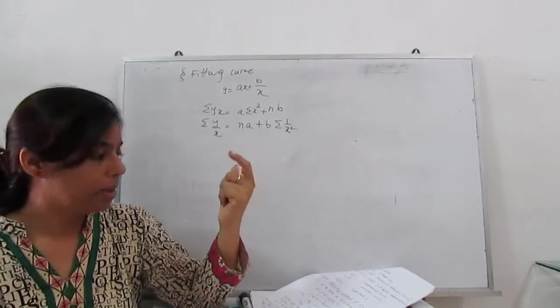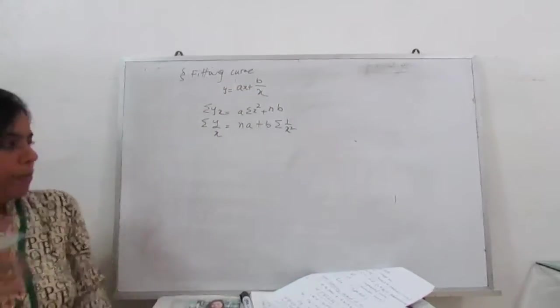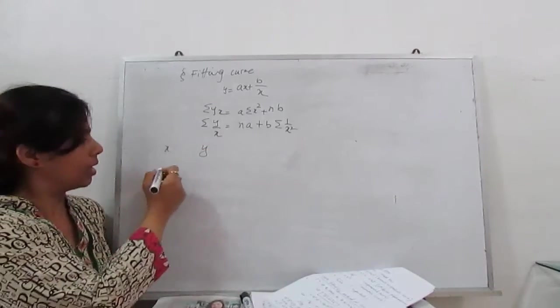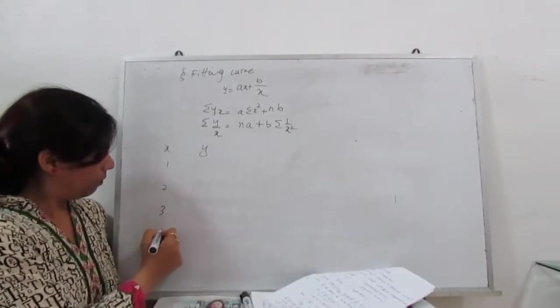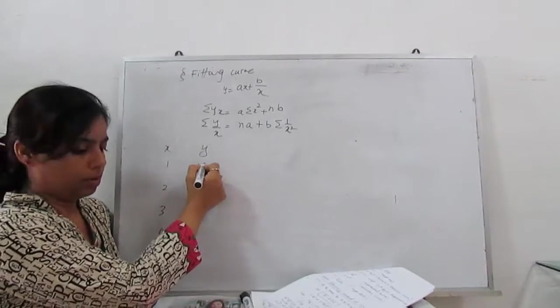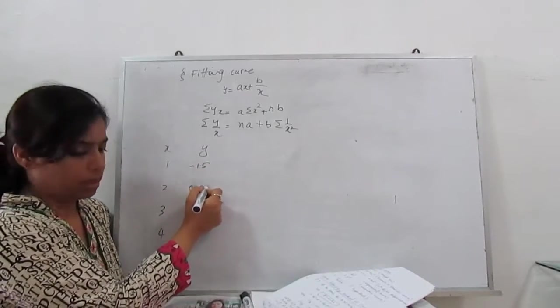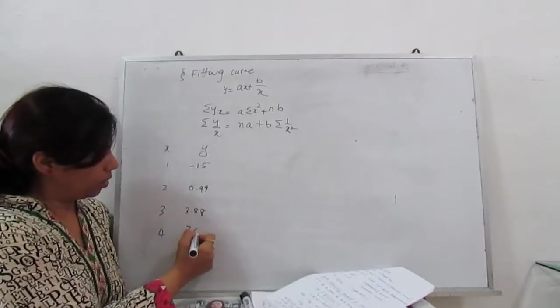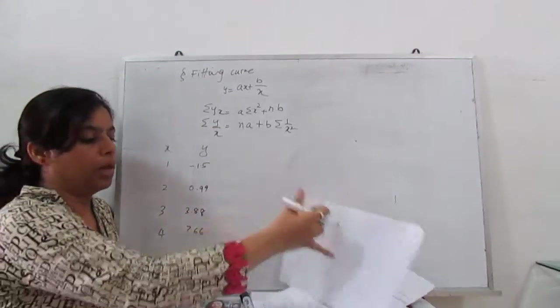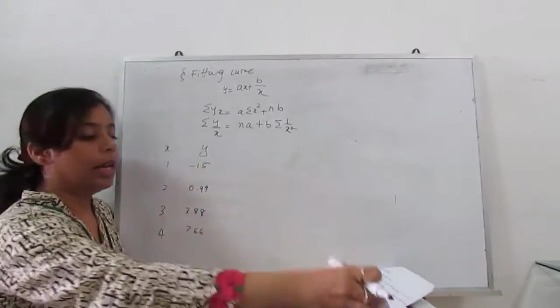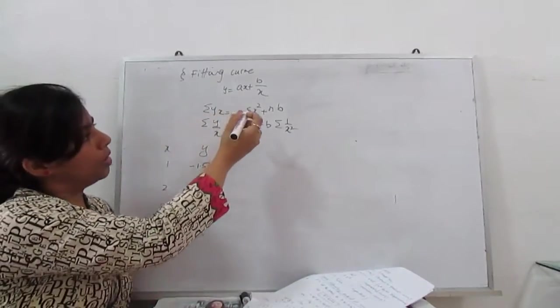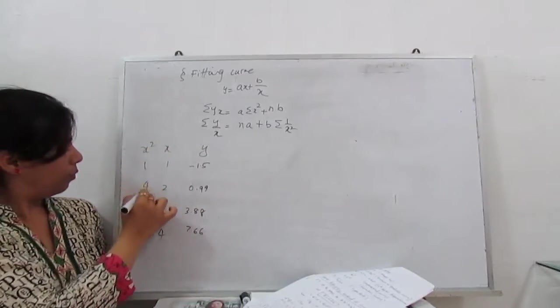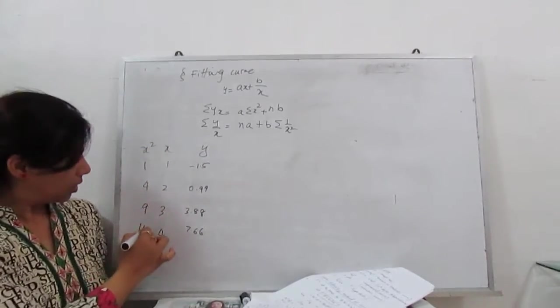Calculate all the values from the given data and substitute there, solve for A and B, substitute value of A and B, you will get the best fit for given data. For example, there is one example I can show you with this. So what are our x and y? 1, 2, 3, 4. Y is minus 1.5, 0.99, 3.88 and 7.66. If we have x and y, next step, we have to find x square. So x square, 1, 4, 9 and 16.